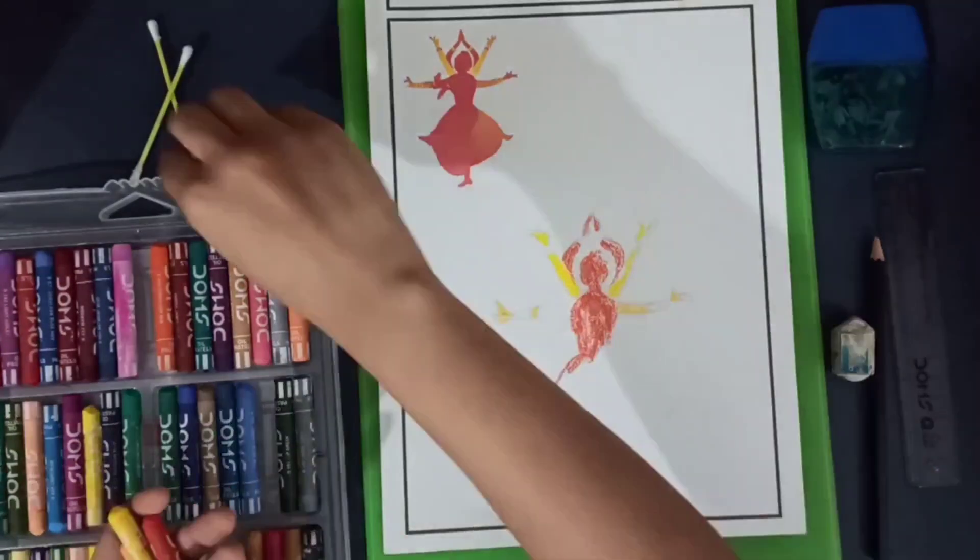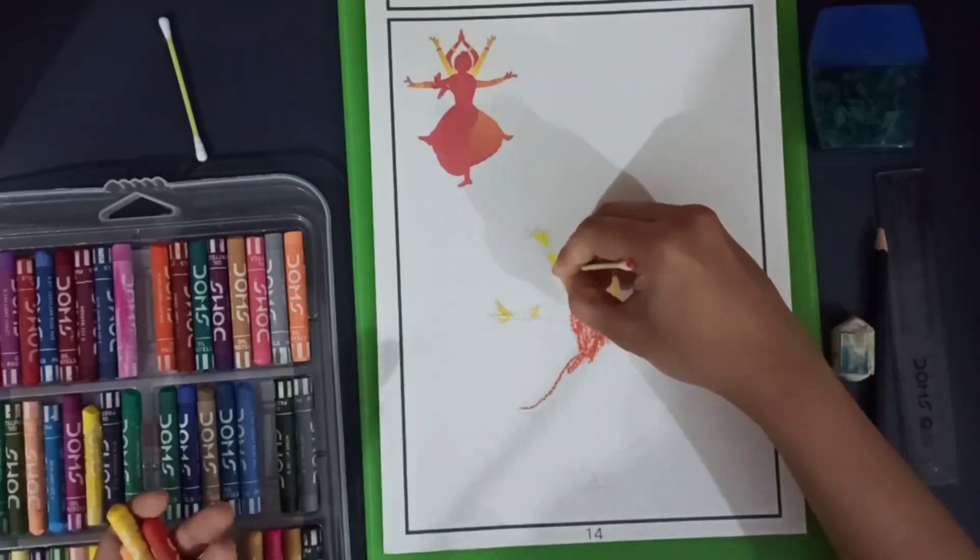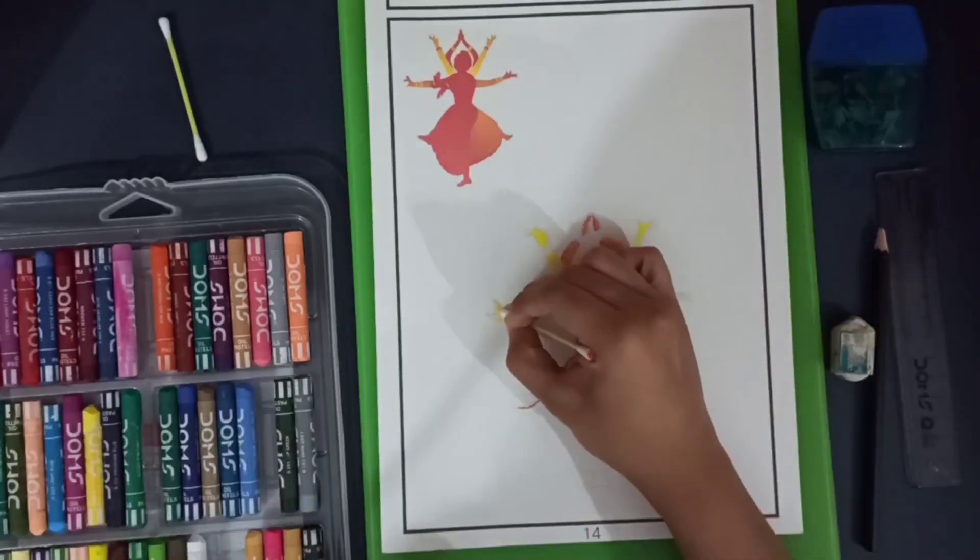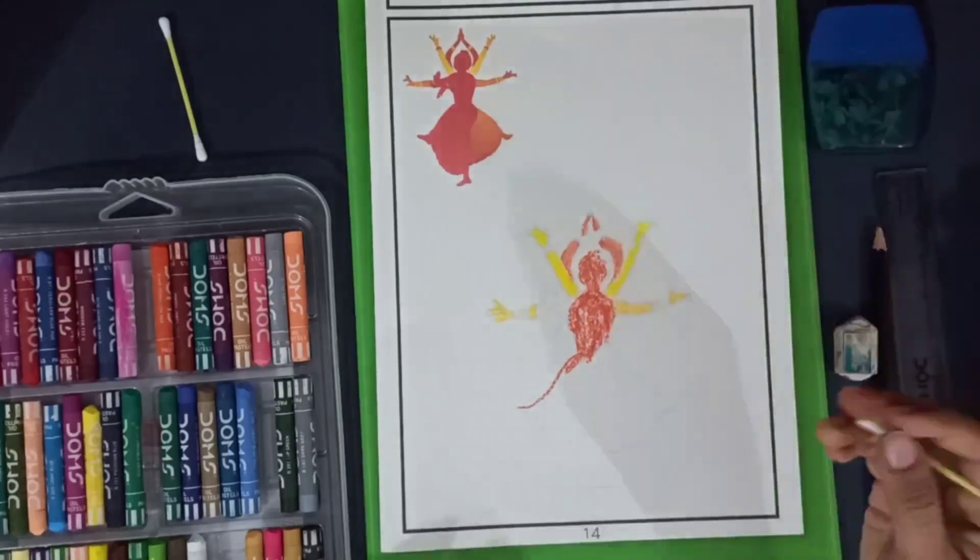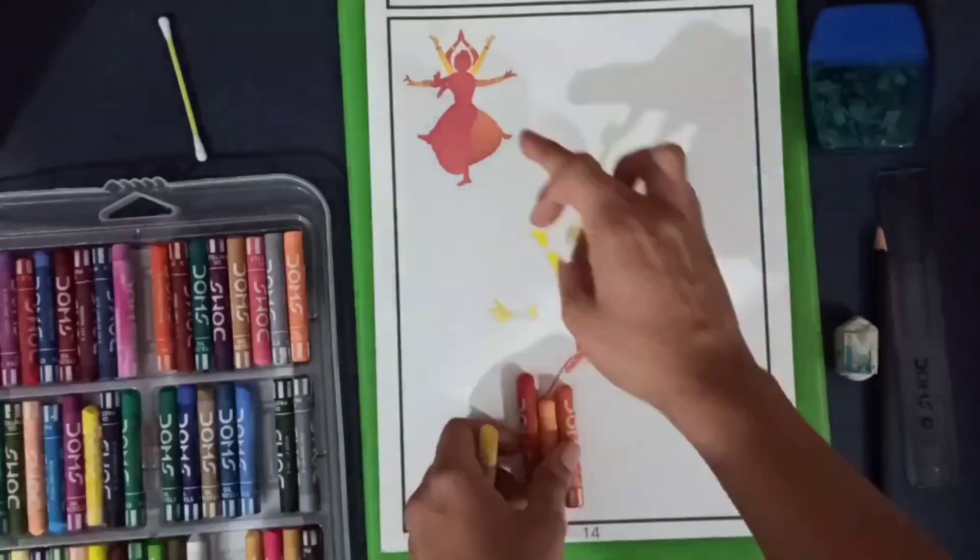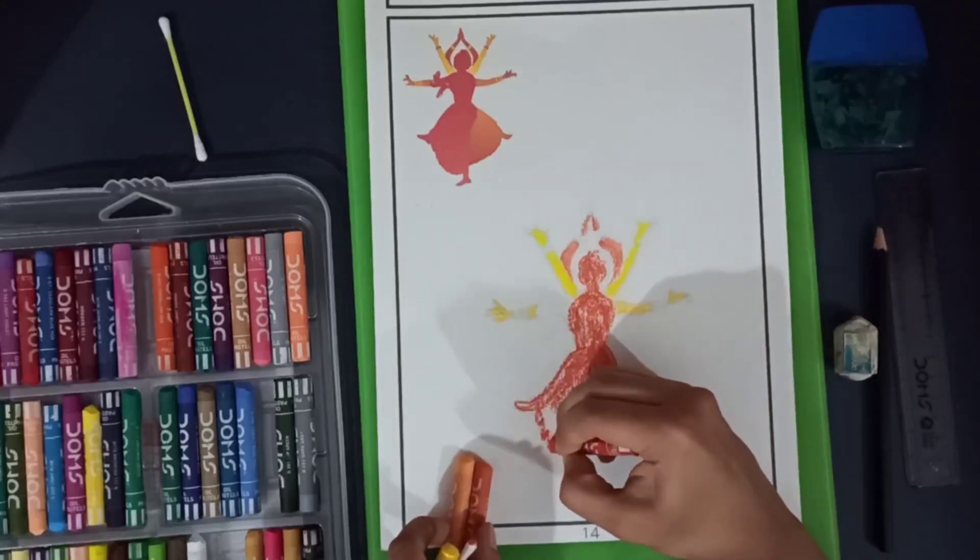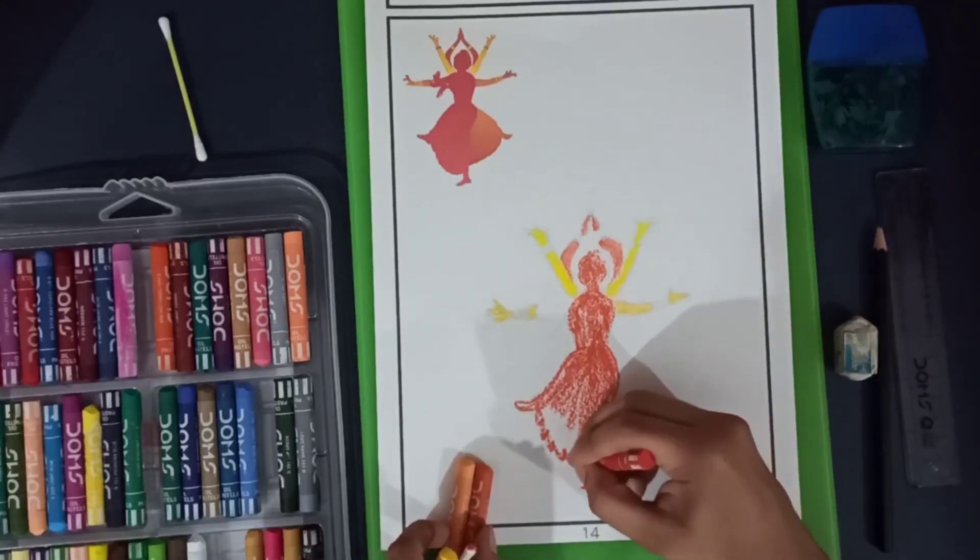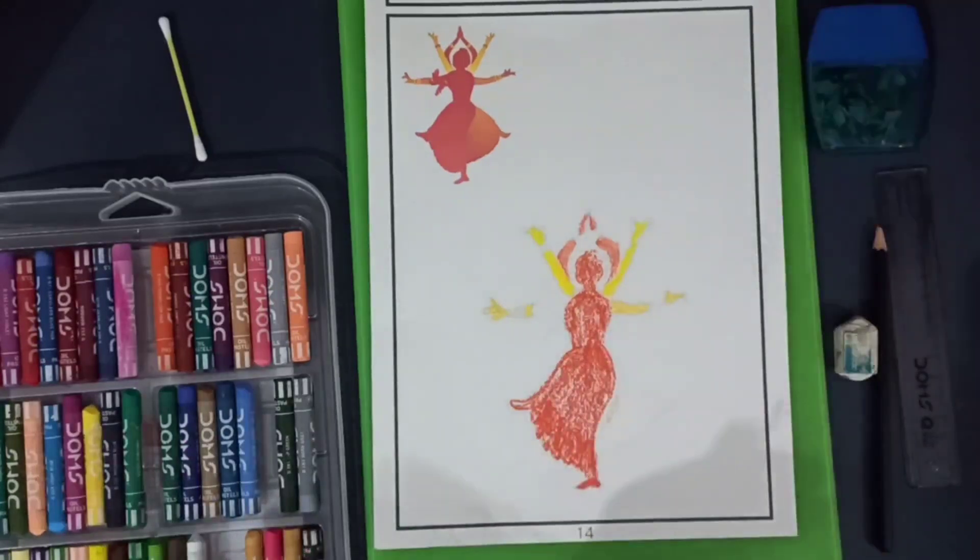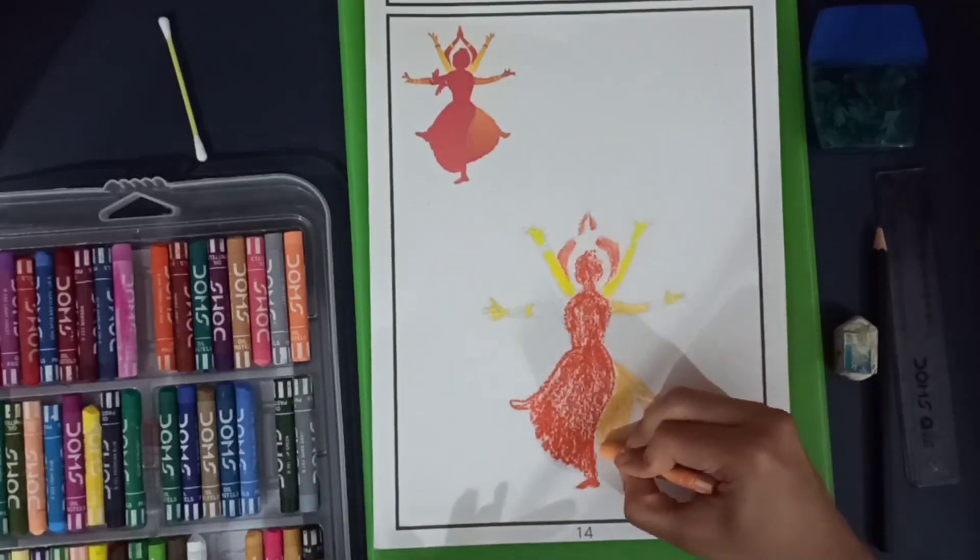That has to be pretty important. Make sure that you're not smudging the same cotton bud where you have blended red color and then trying to blend yellow color, because you will get an orangey color. Try to change that.